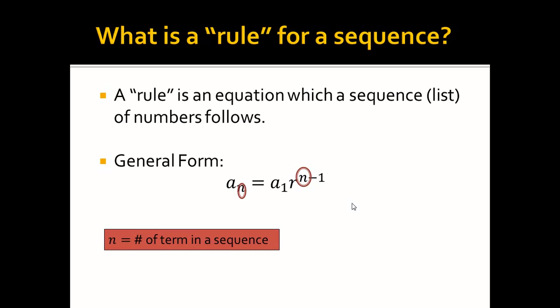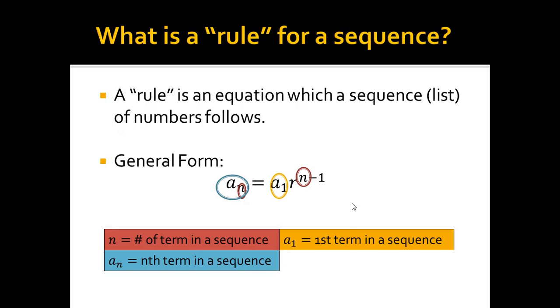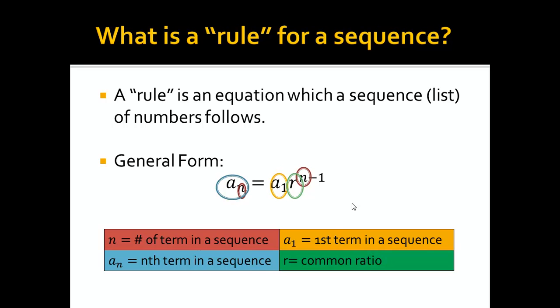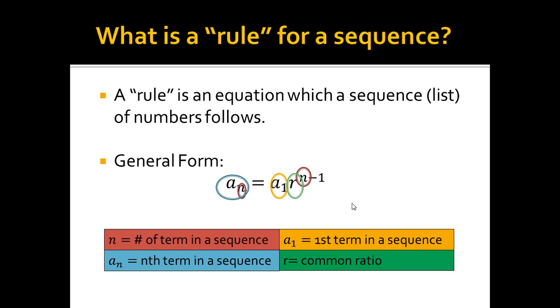n, obviously, is the number of term in the sequence. a sub n is the nth term of a sequence. a sub 1 is the first term. r is the common ratio. Not to be confused with common difference. Common difference, we're adding and subtracting. Common ratio, we're multiplying.